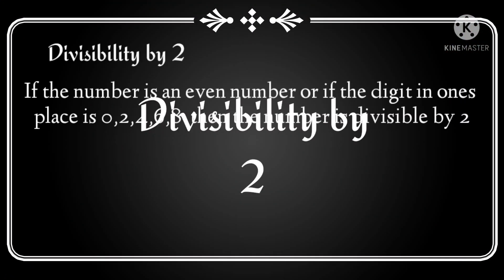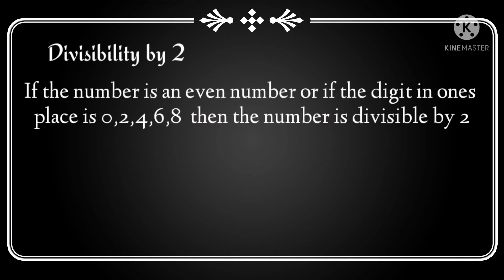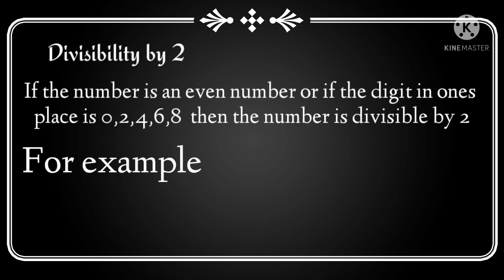The rule for divisibility of 2 is: if the number is an even number, or if the digit in the 1's place is 0, 2, 4, 6, or 8, then the number is divisible by 2.